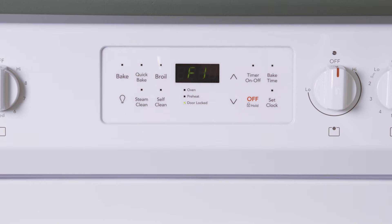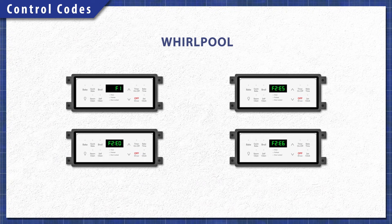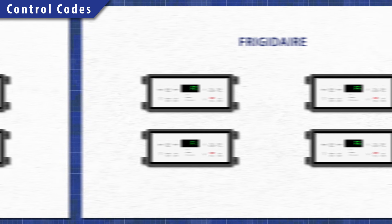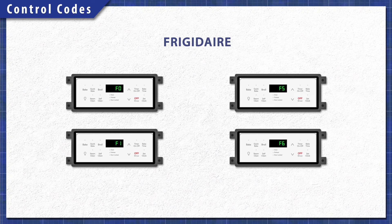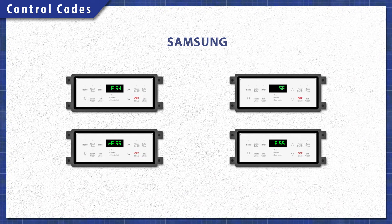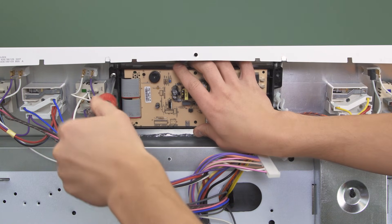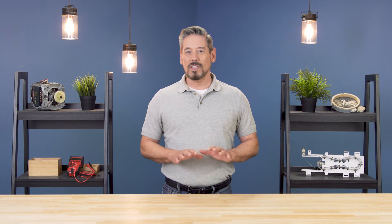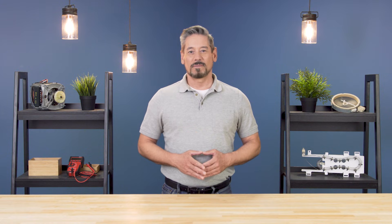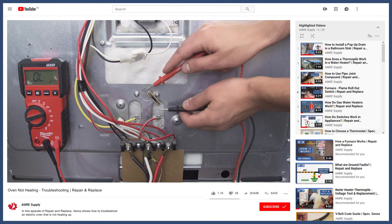Control error codes will show up when there's a problem with the control board or keypad. Whirlpool models might show one of several codes, Frigidaire will show an F code, GE models will display different F codes, and Samsung models will show one of several E codes. Control boards are pretty simple to replace, but are non-returnable after installation. So if you're not sure that the control board is faulty, it's best to call a professional. A lot of problems can also be caused by other components — you can learn more in the troubleshooting videos linked below.